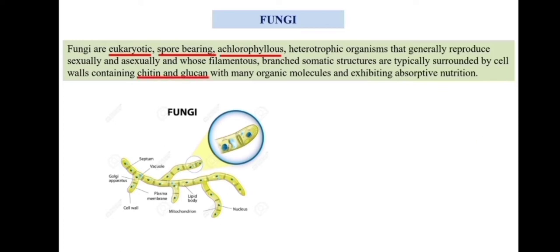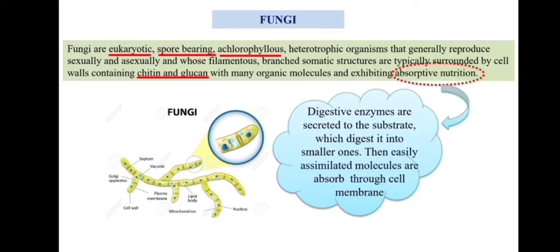Some groups of fungi such as oomycetes contain cellulose in the cell wall. Fungi exhibit absorptive type of nutrition. In this type of nutrition, the digestive enzymes are directly secreted over the substrate which digests the substrate into smaller particles, so that the digested particles will be easily absorbed by the fungi.